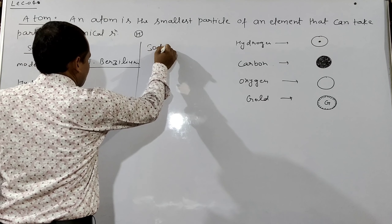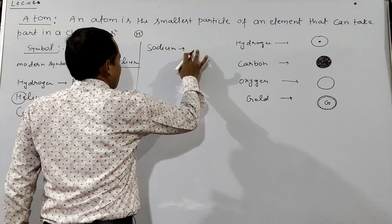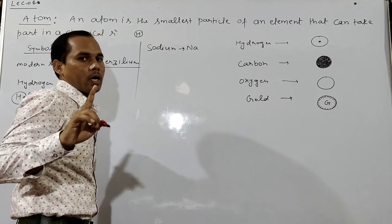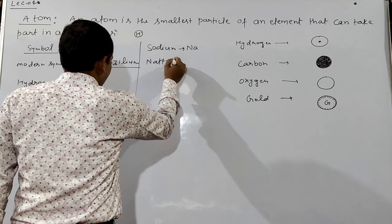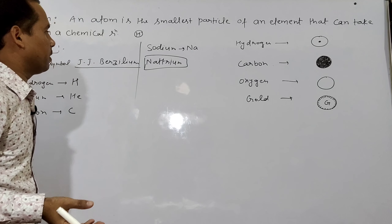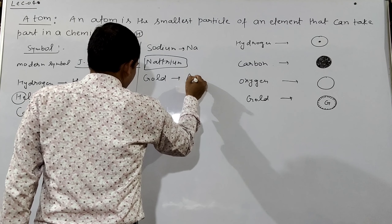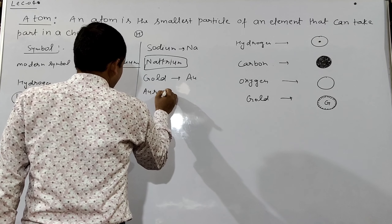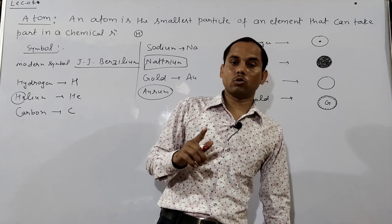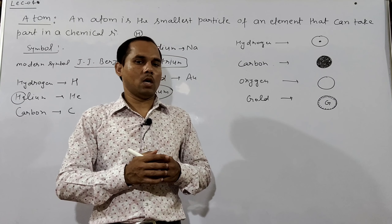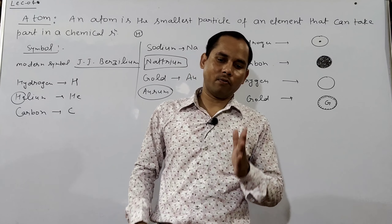Sodium's symbol should have been 'S', but its symbol is actually Na. It is Na because sodium's Latin name is Natrium, so Na was taken from Natrium. Similarly, gold's symbol should be 'G', but it is Au, because gold's Latin name is Aurum. And lead's symbol should be 'L', but it is Pb, because its Latin name is Plumbum. Most elements have symbols from the first letter of their name, but some come from Latin names.